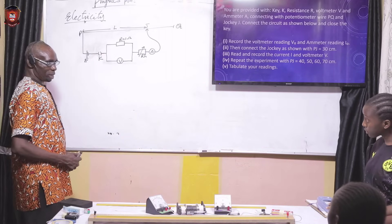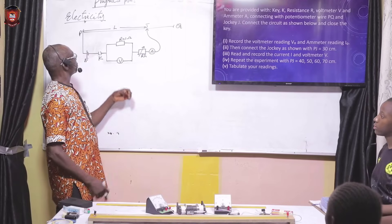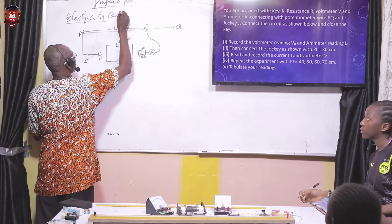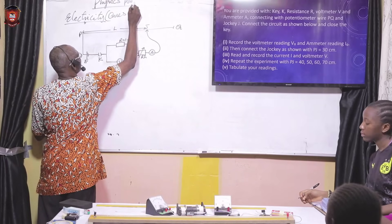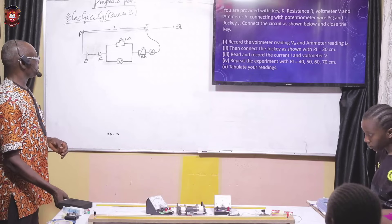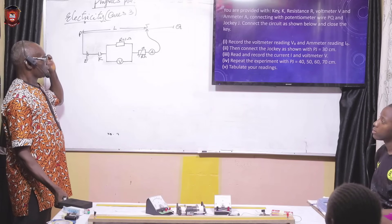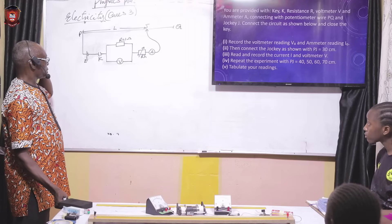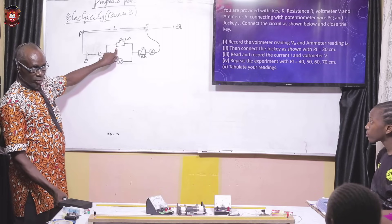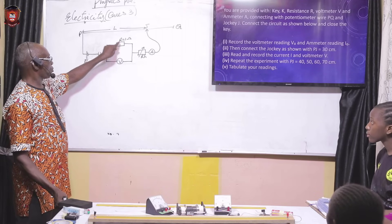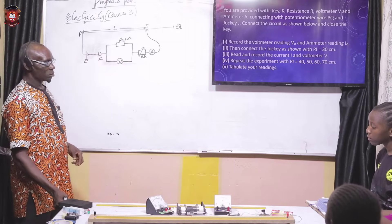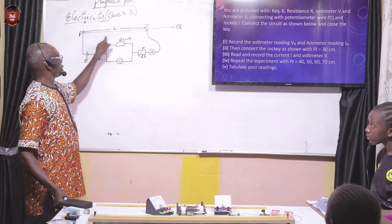Good day, we are back again to the same physics particles, electricity question number three. Based on this, we are expected to determine the resistance of a coil labeled R equals 1 ohm, using the potentiometer method.